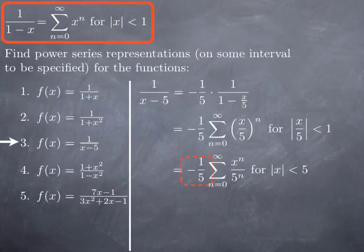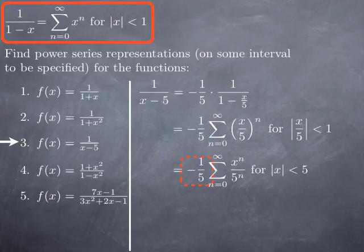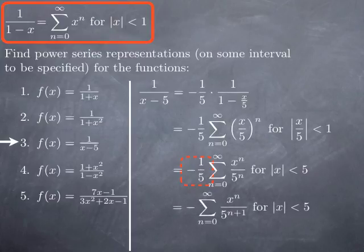Now finally, this is not required, but you could bring the 1 fifth factor inside the series when you have convergence. Then you have 1 over 5 to the n multiplied by 1 over 5, so you get 1 over 5 to the n plus 1. And so we obtain a power series representation for 1 over x minus 5 valid on the open interval negative 5 to 5.